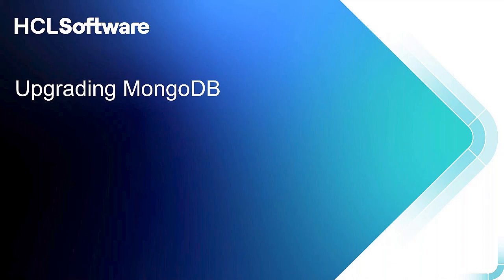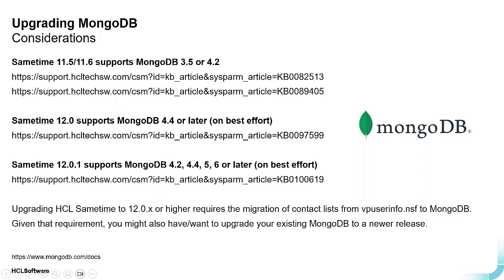With contact lists migrating to MongoDB, it's worth knowing the MongoDB version support across Same Time releases: starting with MongoDB 3.5, and now with Same Time 12.0.1, MongoDB 6 is also supported. When moving to Same Time 12, you'll likely also want to upgrade MongoDB. HCL references the official MongoDB documentation for upgrade guidance, as MongoDB is not part of the HCL product.